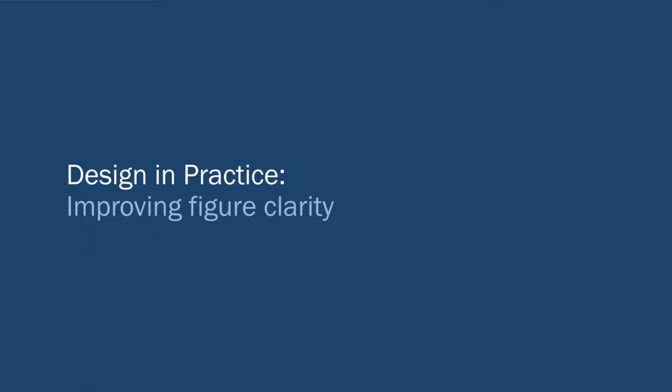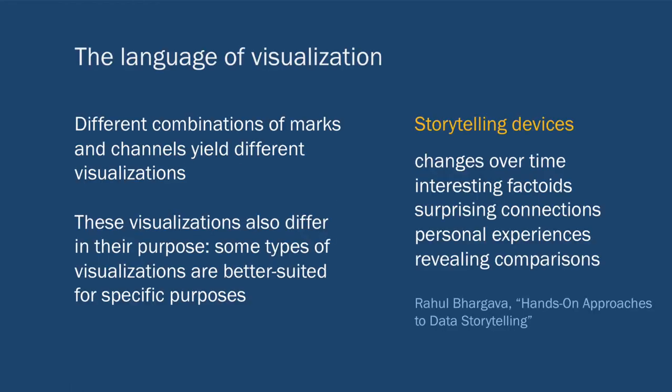We may design a figure and think that it is perfectly clear in communicating the thing we want to communicate. But in reality, we are biased as the designer to understand what the figure is trying to say. And if we give that to somebody else, they may not automatically interpret it the exact same way that you intended. So to start this discussion of figure clarity, I want to go back to this language of visualization, because it will give us a common vocabulary for thinking about how to measure clarity of a figure.